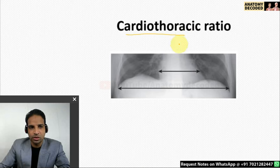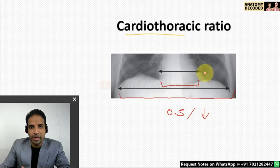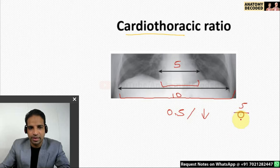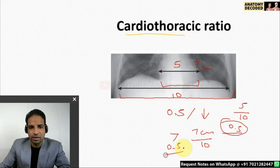The cardiothoracic ratio is the cardiac shadow compared with the shadow of the entire thorax. Ideally it is 0.5 or less. If the cardiothoracic ratio is increased, that means there is cardiomegaly. For example, if the cardiac shadow is 5 cm and the thorax is 10 cm, the ratio is 0.5. If the cardiac shadow is 7 cm and the thorax is 10 cm, the ratio is more than 0.5, indicating cardiomegaly. The cardiothoracic ratio is important for determining whether cardiomegaly is present.